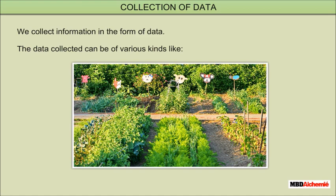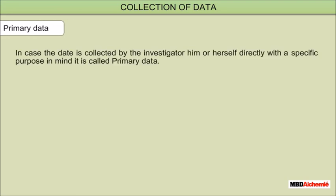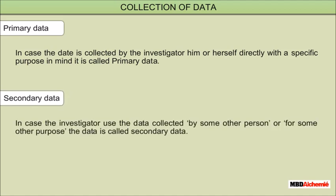The data can be gathered in different ways. Primary data: in case the data is collected by the investigator him or herself directly with a specific purpose in mind, it is called primary data. Secondary data: in case the investigator uses the data collected by some other person or for some other purpose, the data is called secondary data.